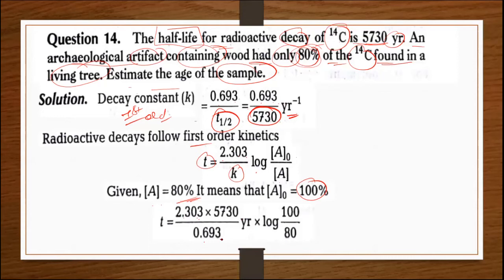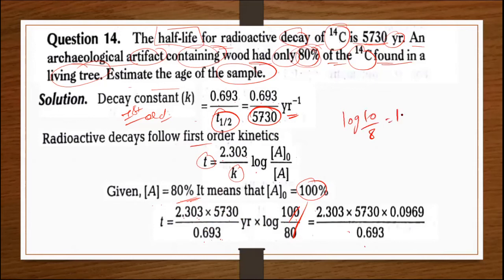t = (2.303 / k) × log([A]₀ / [A]). Given [A] = 80%, it means [A]₀ = 100%. t = (2.303 × 5730 / 0.693) × log(100/80). Calculate log 10 minus log 8.